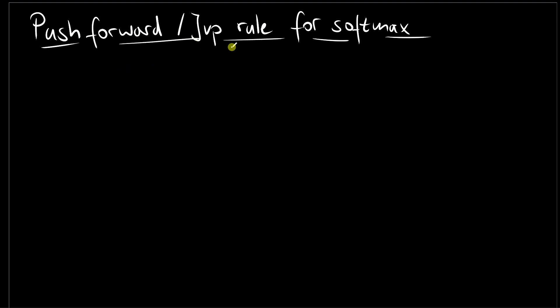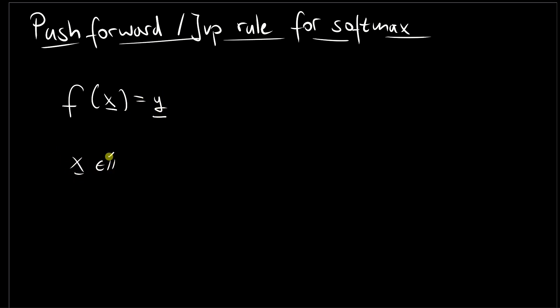In this video we are going to derive the push forward or Jacobian vector product rule for the softmax operation. The softmax operation is typically found in classification tasks where it maps logit values ranging from minus infinity to plus infinity to probability values. It takes an argument as a vector and produces another vector, framed as a function f that takes input x and produces output y, with x being an n-dimensional vector and y also being an n-dimensional vector.